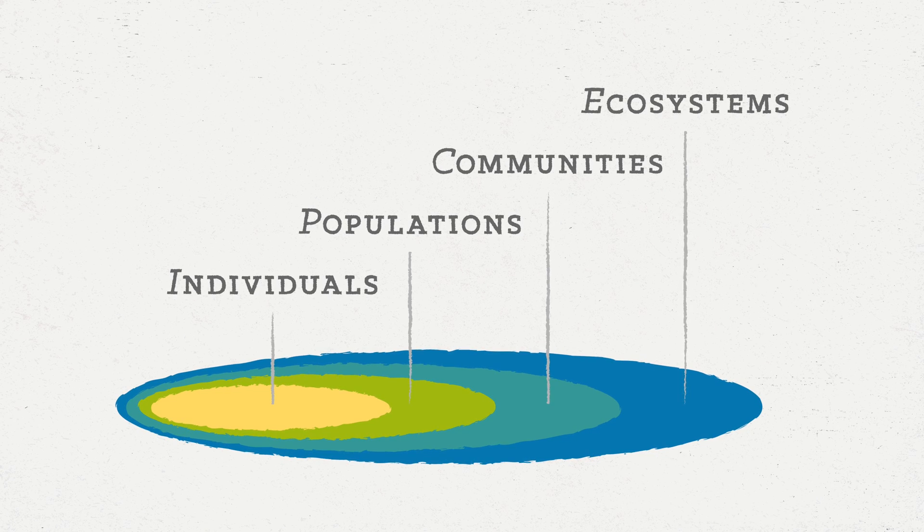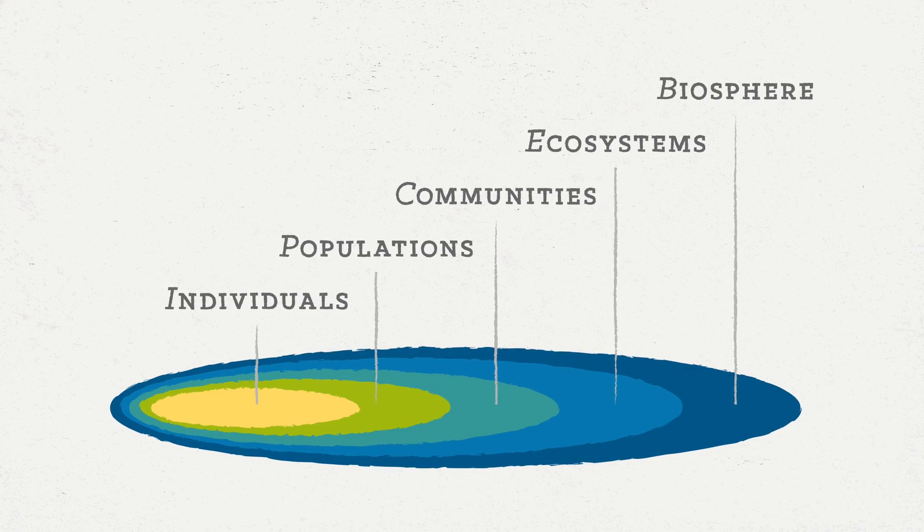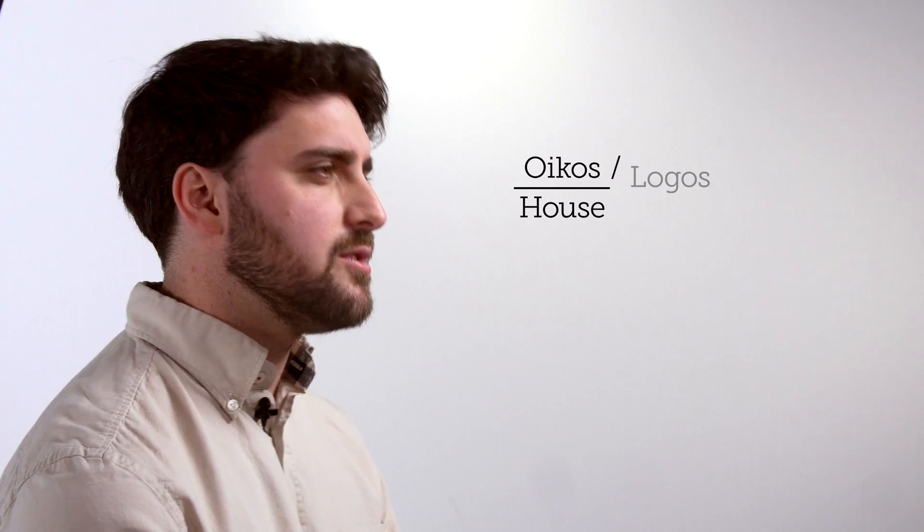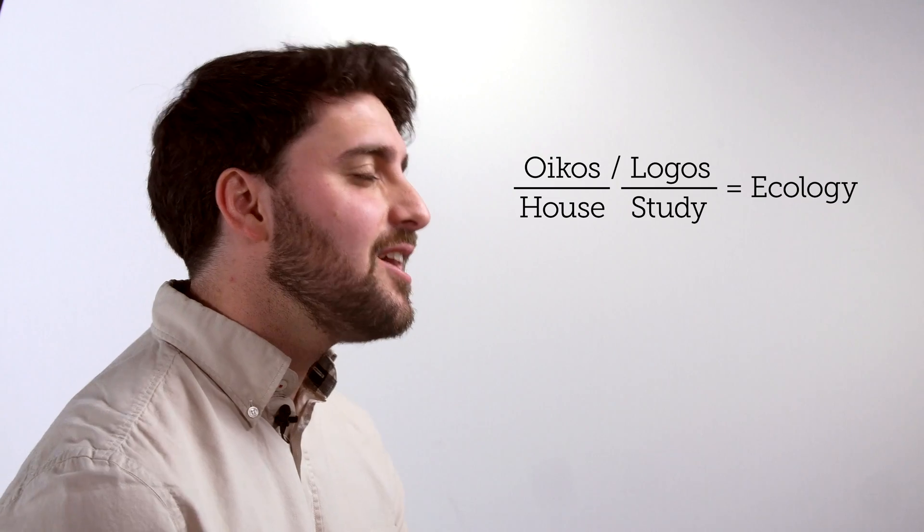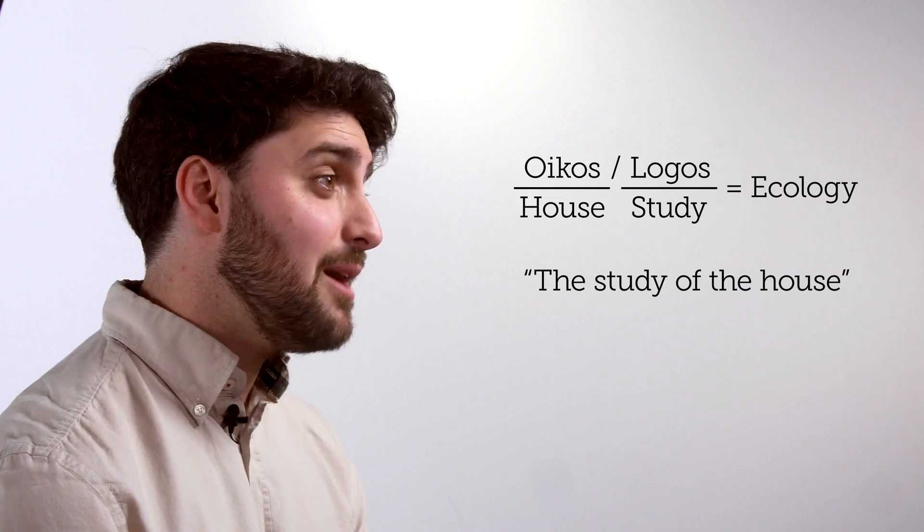And communities in their abiotic environment, that's an ecosystem. Collections of ecosystems, all ecosystems in the world, that's what we call the biosphere. Ecology is in and of itself a really interesting word. It comes from the Greek oikos, which means house, and logos, to study. So ecology literally means the study of the house, our house, this biosphere we inhabit.